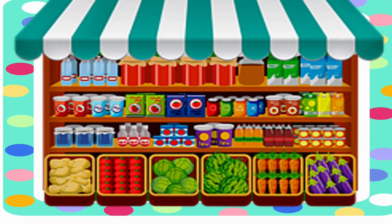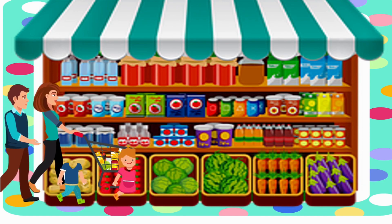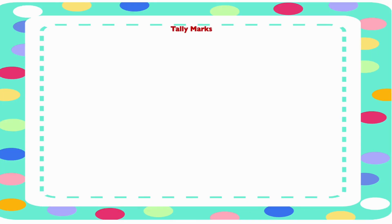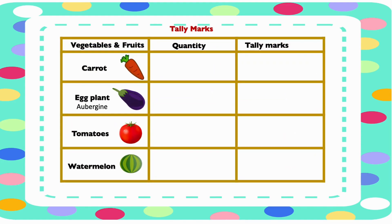Now let's do some examples on tally marks. Mr. Jones and family went shopping. They bought some fruits and vegetables. We're going to look at these fruits and vegetables and represent them with tally marks. They bought some carrots, eggplants, tomatoes, and watermelon. They bought three carrots, and this is represented by three straight lines.